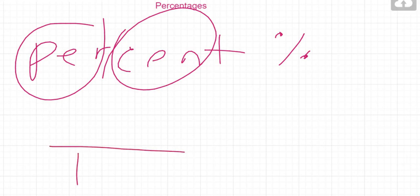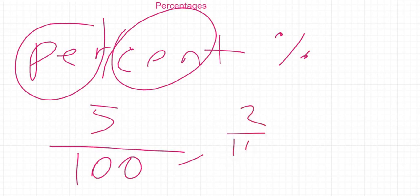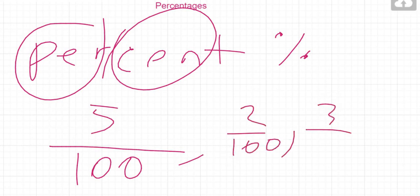Percent means out of a hundred. So any percent you want to find, you must divide by a hundred. For example, five percent is written as 5 over 100. Two percent is 2 over 100. Three percent of something is 3 over 100. Anything you find a percent of, you put it over a hundred.